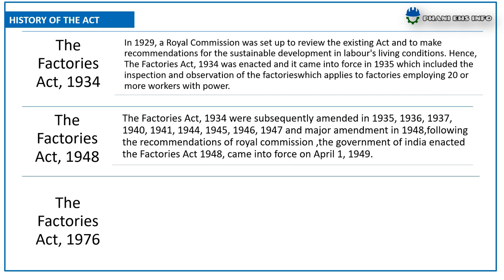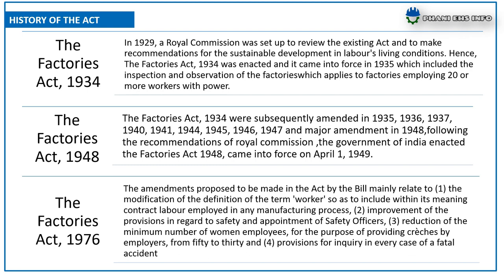The Factories Act 1976 amendments mainly related to: modification of the definition of 'worker' to include contract labor employed in any manufacturing process; improvement of provisions regarding safety and appointment of safety officers; reduction of the minimum number of women employees for providing crèches from 50 to 30; and provision for inquiry in every case of fatal accident.